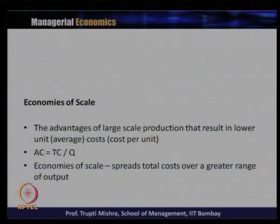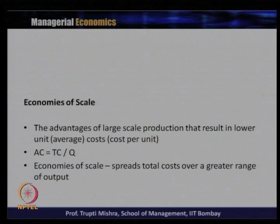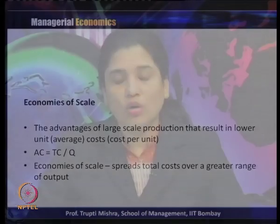Whether it is average cost, marginal cost, or total cost, these tools are used for business and economic decisions related to output, inventory, or scale. Next, we move to the topic of economies of scale, which was briefly introduced in the previous session. We want to understand why the long run average cost curve initially decreases, reaches a minimum, and then increases if the firm continues to expand production.